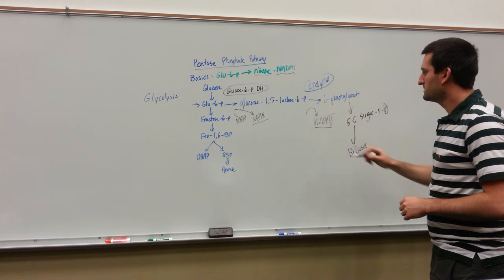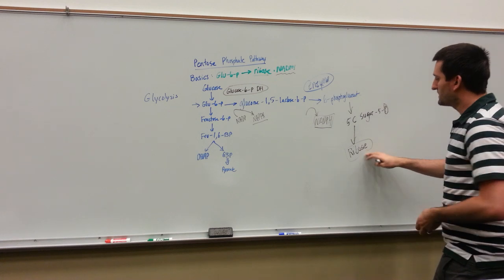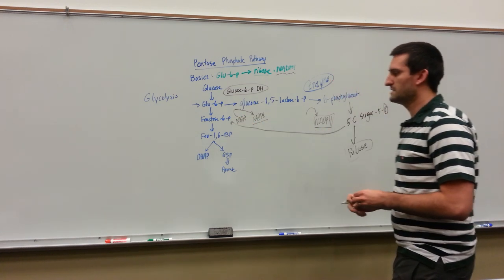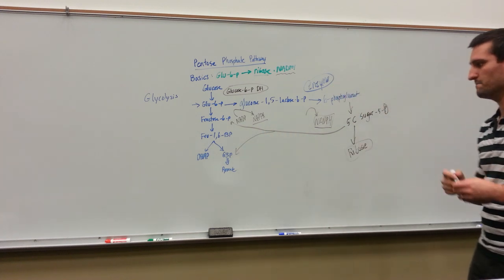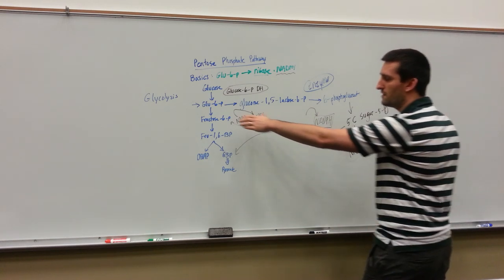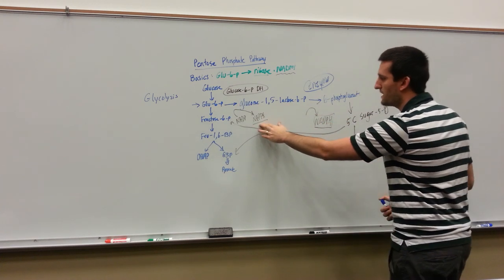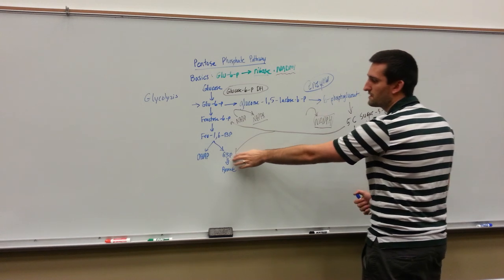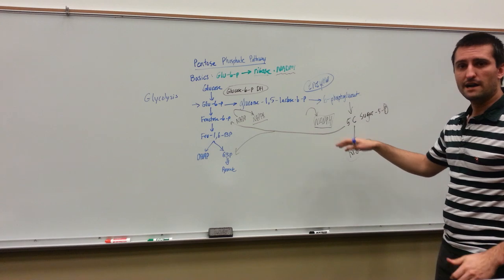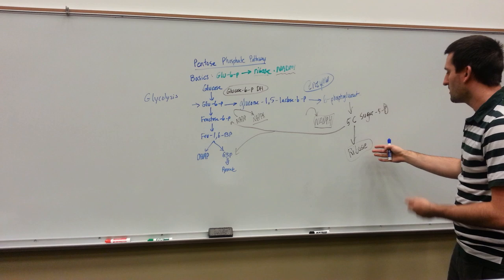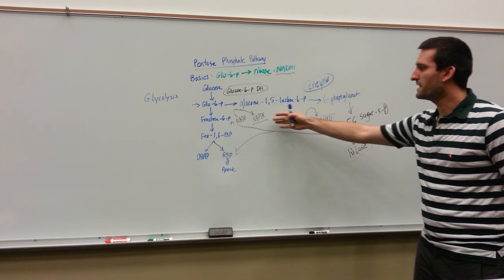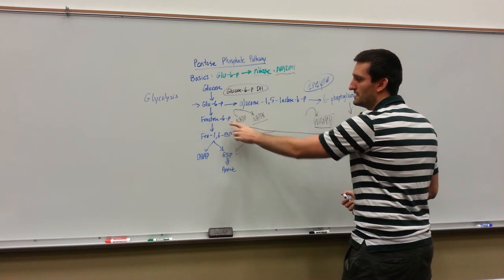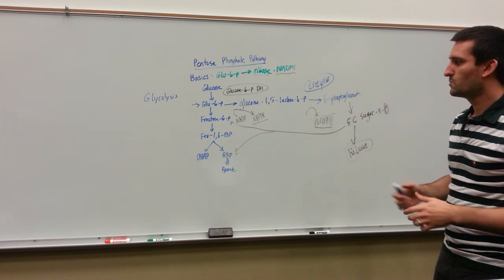The body created some NADPHs if needed, or some ribose. What's really interesting is, if we don't need the ribose, we can turn this 5-carbon sugar back into a fructose-6-phosphate and a glyceraldehyde-3-phosphate molecule. Our body essentially shunted off glucose-6-phosphate, created some NADPHs, then spit a fructose-6-phosphate and a glyceraldehyde-3-phosphate back into the glycolysis pathway. Notice it's just one step down — we created a fructose-6-phosphate, so we really didn't lose too much.